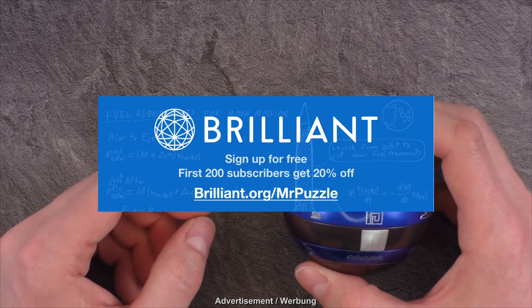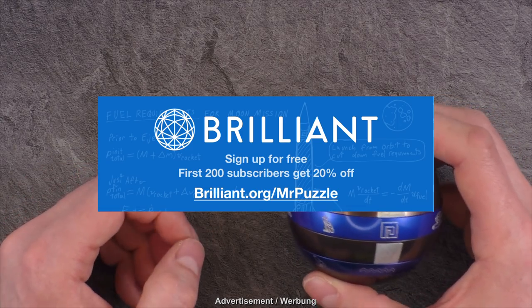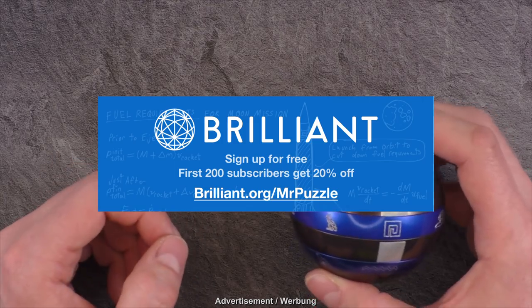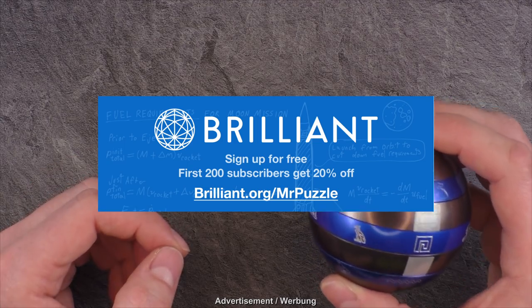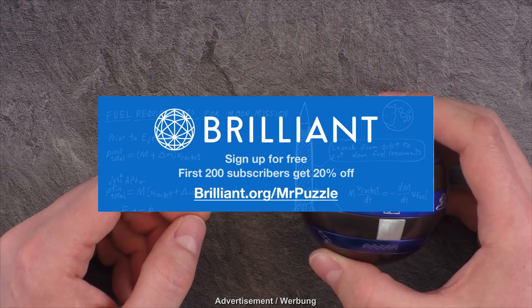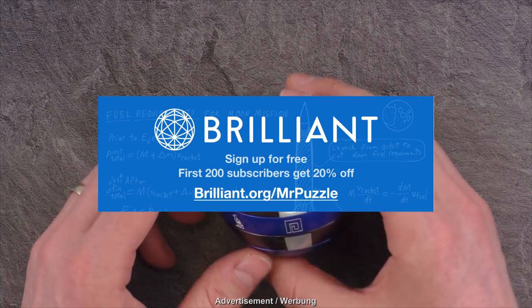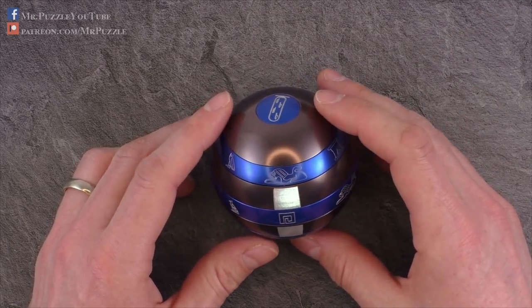To support Mr. Puzzle and learn more about Brilliant, use the link in the video description and go to brilliant.org and sign up for free. And also, the first 200 people that go to that link will get 20% off the annual premium subscription. Thanks again to Brilliant for supporting my channel.